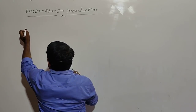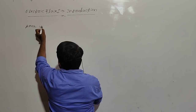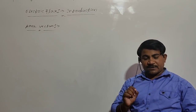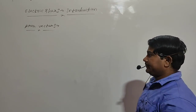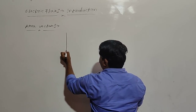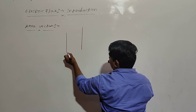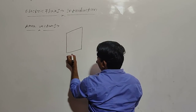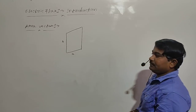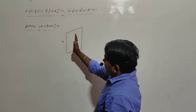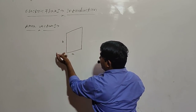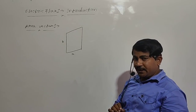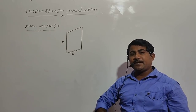Area vector. First of all, I will take a planar area element. This is a planar area element. This is length. See here, this area element has an area. How to represent area? Area can be represented as length into length. Then how to take the direction? What is the direction of area vector? The area element can be represented in terms of area vector.